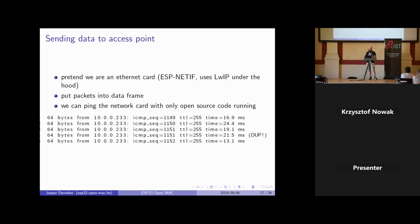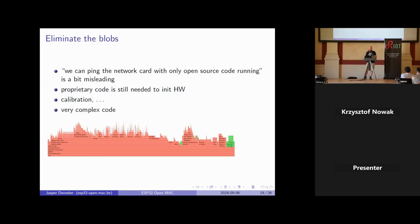As you can see, we can now ping the ESP32 with only open source code running — which is a bit of a misleading statement. There is still a bug where we sometimes get duplicate ping packets, but we have found how to solve this by now. We can ping with only open source code running — technically true — because we still need the entire proprietary code to initialize the hardware, but once initialization is done we can stop all proprietary code and use only our code to send and receive packets.